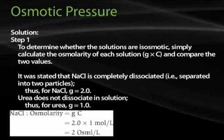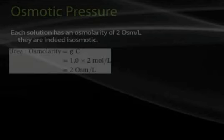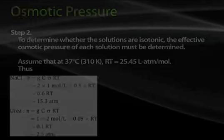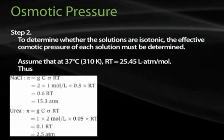It was stated that sodium chloride completely dissociates, i.e. it separates into two particles; thus for sodium chloride, G equals 2. Urea does not dissociate in solution; thus for urea, G equals 1. So for sodium chloride, osmolarity is G times C, or 2 times 1 mole per liter, equals 2 osms per liter. The osmolarity for urea is G times C, or 1 times 2 moles per liter, equals 2 osms per liter. Each solution has an osmolarity of 2 osms per liter; they are indeed iso-osmotic.